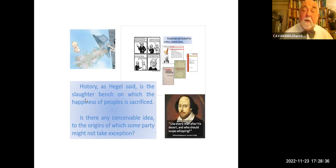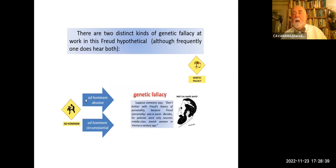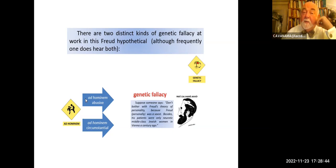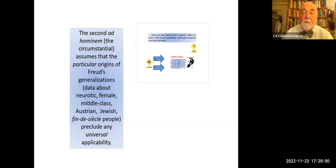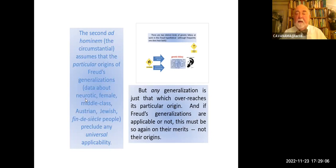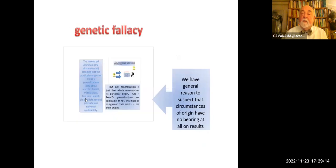As Shakespeare reminds us: 'Use every man after his desert and who should escape whipping?' Come back to Freud. There are two distinct kinds of genetic fallacy at work in the Freud hypothetical — ad hominem abusive and ad hominem circumstantial. The circumstantial assumes that the particular origins of Freud's generalizations — dated, erotic, female, middle-class, Austrian, Jewish, turn of the 20th century — preclude any universal applicability. But any generalization is just that which overreaches its particular origin. If Freud's generalizations are applicable or not, this must be determined on their merits, not their origins. We have general reason to suspect that circumstances of origin have no bearing on results.